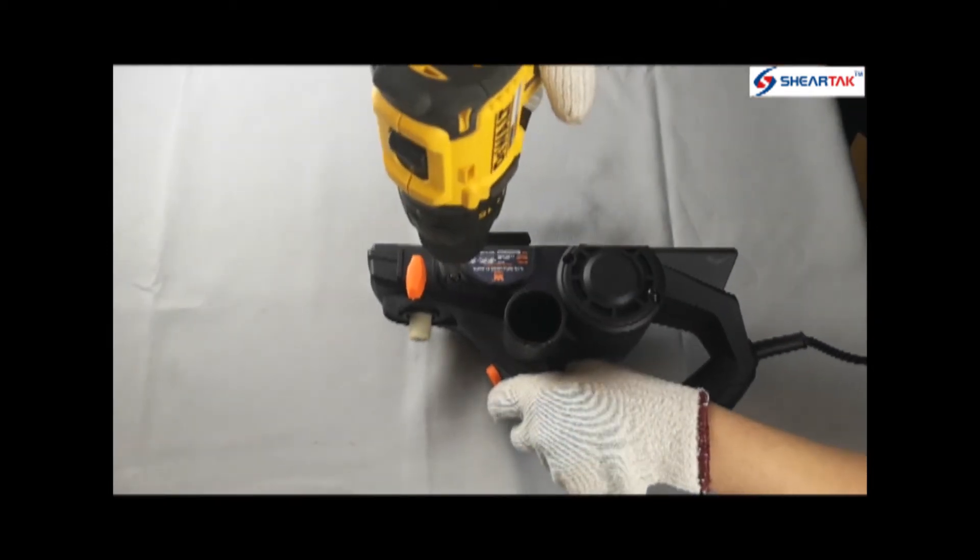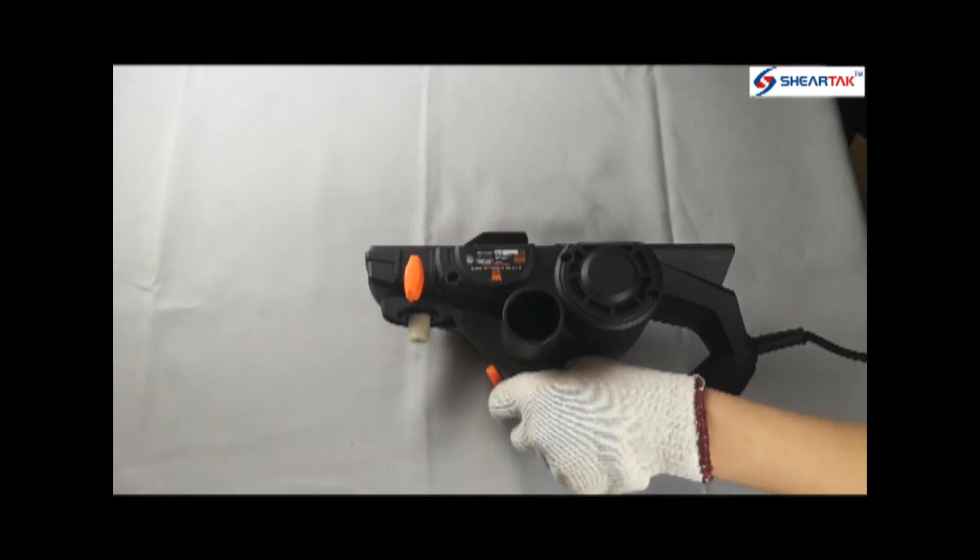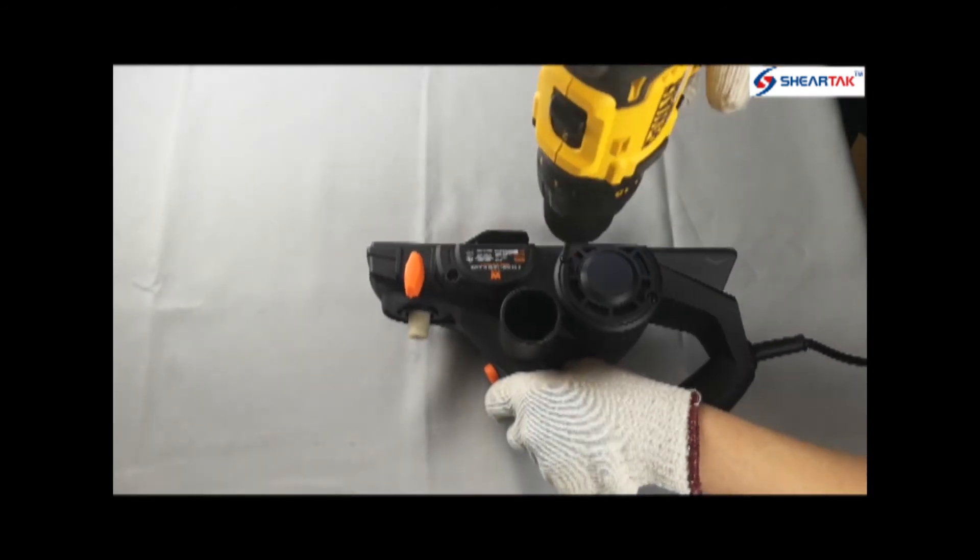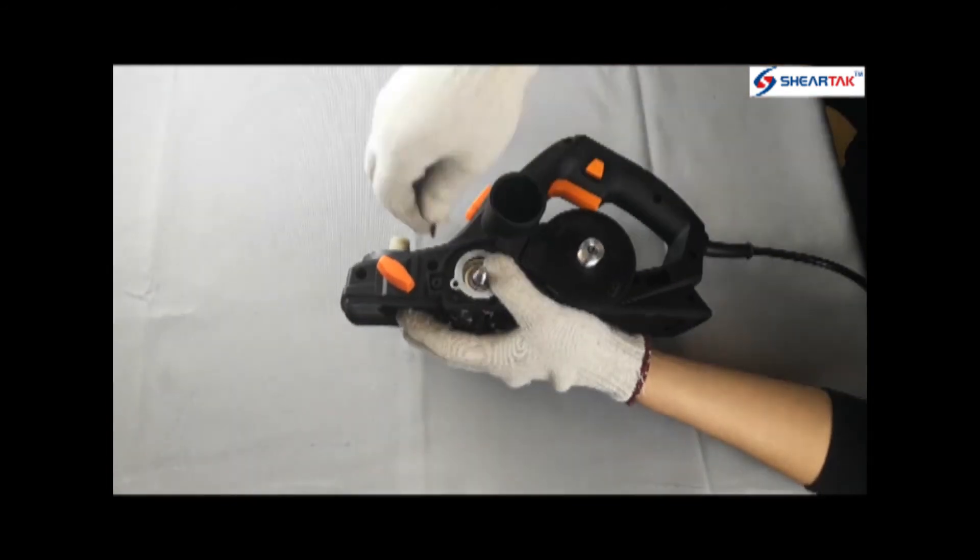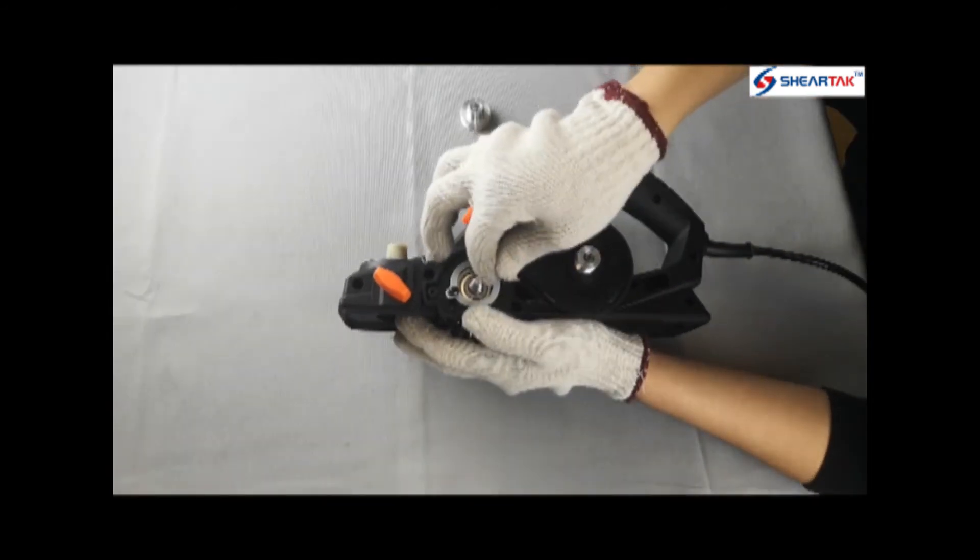Clamp the motor cover. Install the big washer and tighten it up.